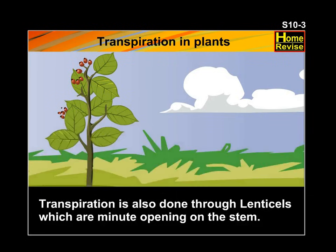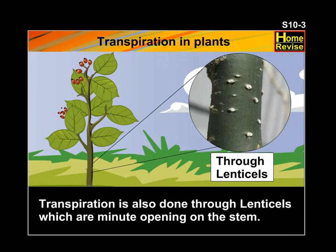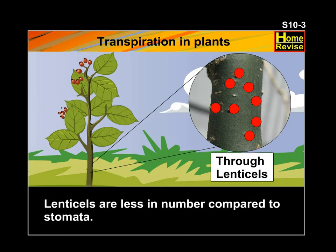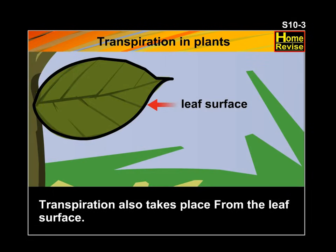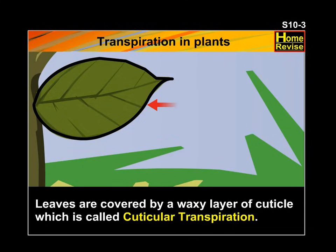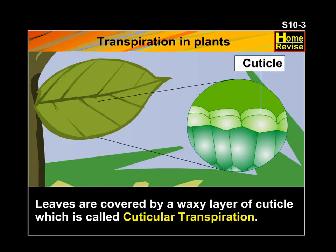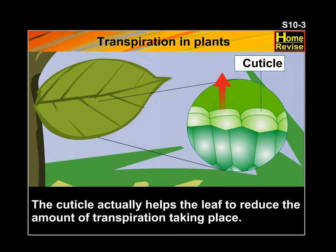Transpiration is also done through lenticels, which are minute openings on the stem. Lenticels are less in number compared to stomata. Transpiration also takes place from the leaf surface. Leaves are covered by a waxy layer of cuticle, which is called cuticular transpiration. The cuticle actually helps the leaf to reduce the amount of transpiration taking place.